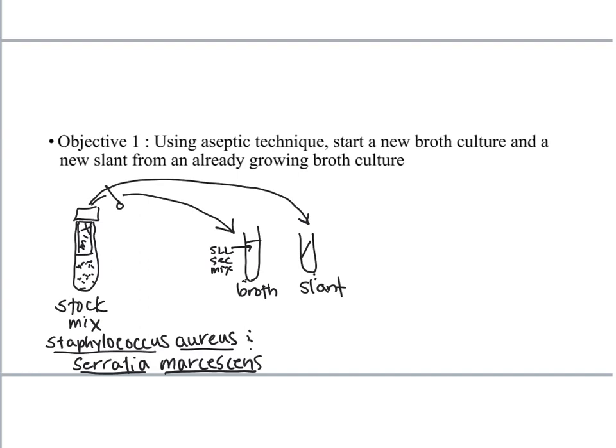That mix is actually two different organisms. It's Staphylococcus aureus and Serratia marcescens. You can see why we allow you to just label that mix because that's kind of a lot to write on a test tube. So remember that's a broth culture that's already growing so that culture is going to look pretty cloudy.